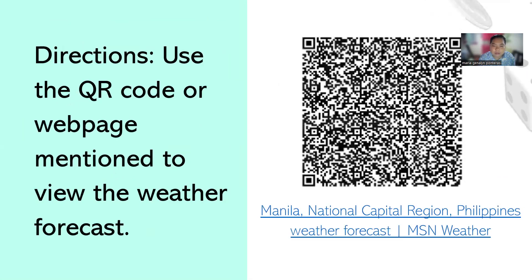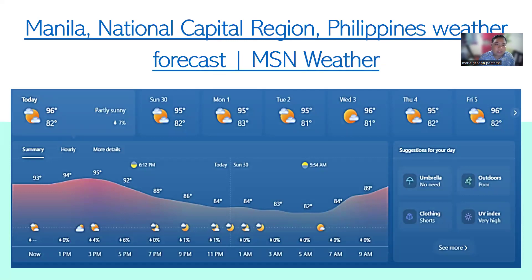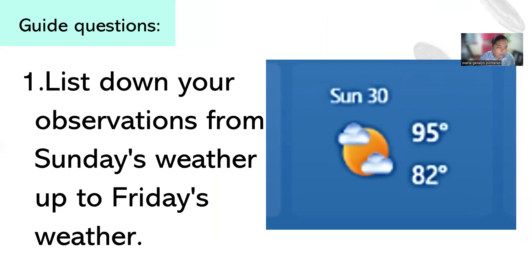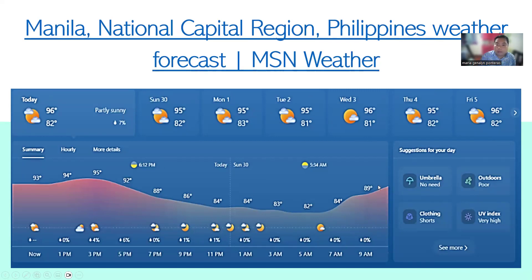If you have your phone with you, you can scan this QR code here from Manila, National Capital Region, Philippines Weather Forecast. If you scan the code, you will see a record of weather from Saturday to Friday, including humidity and temperature. Now observe the data we have and list down your observations from Sunday's weather through Friday's weather.